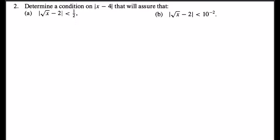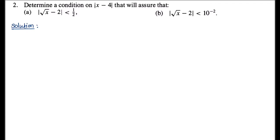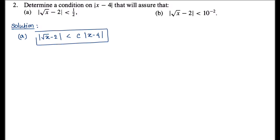This is the problem from section 4.1, question number 2. The question says: determine a condition on |x - 4| such that this inequality will hold. This is similar to question number 1, which is based on the epsilon-delta definition of the limit of a function. Our target is to write |√x - 2| less than some constant times |x - 4|.